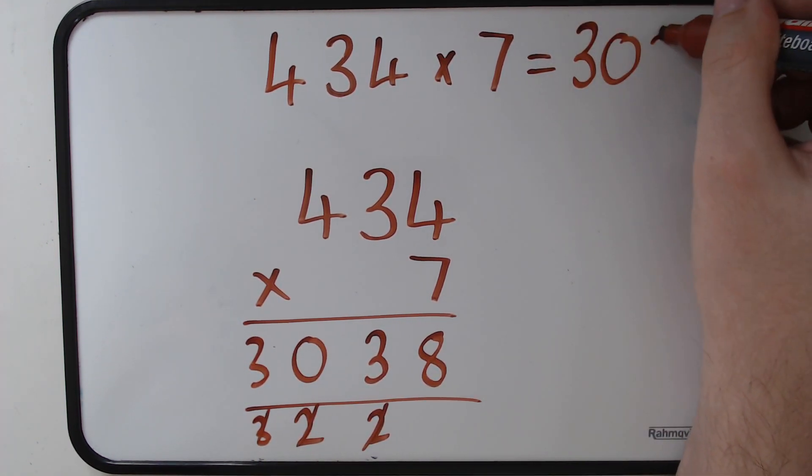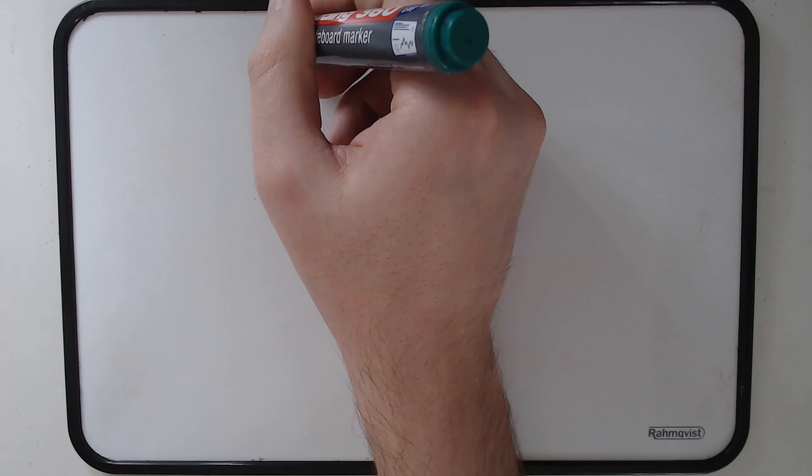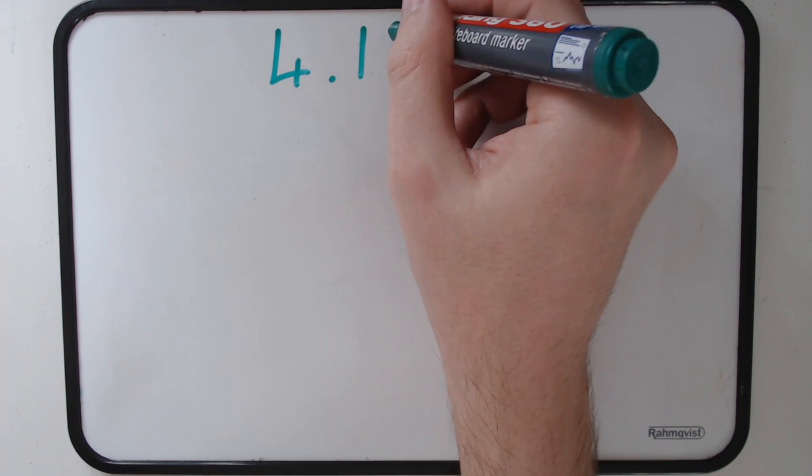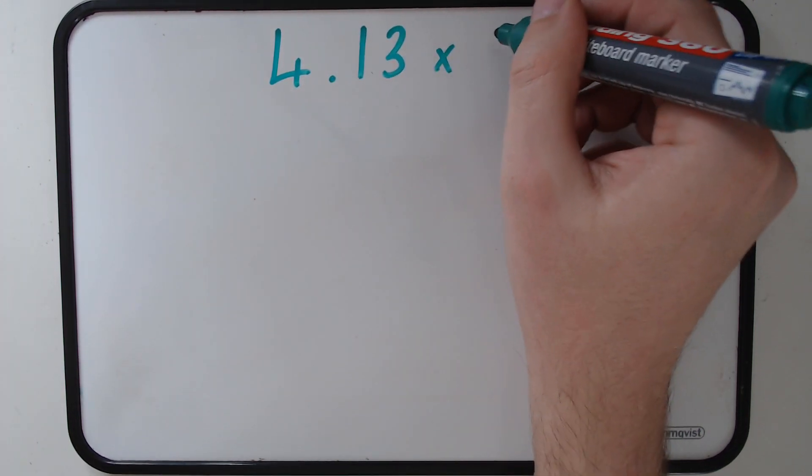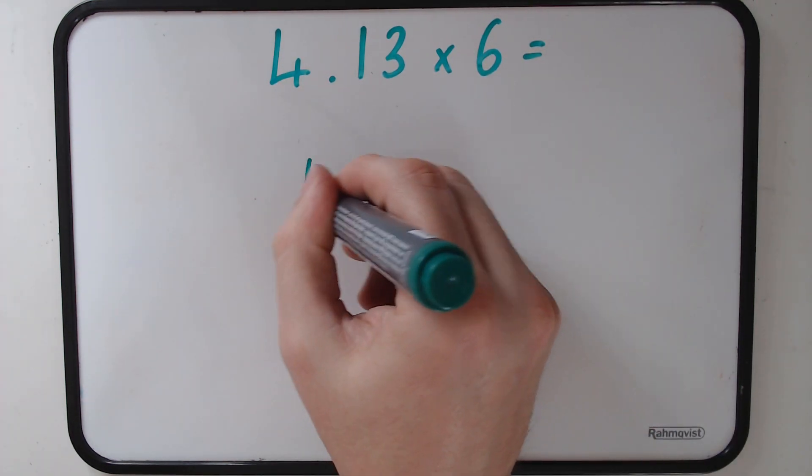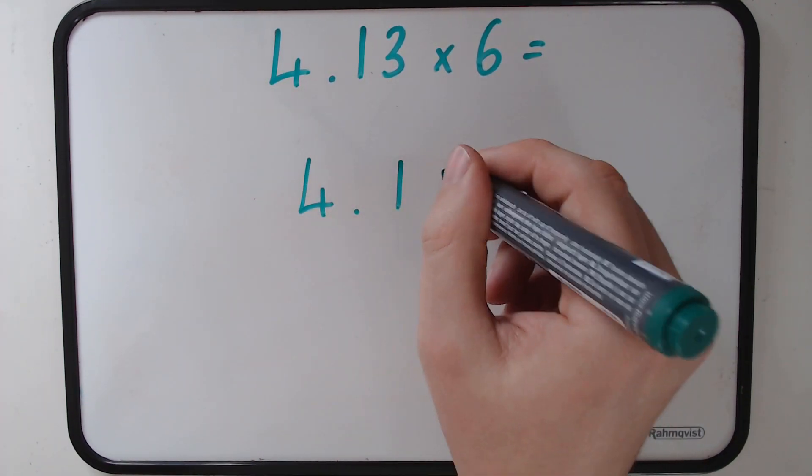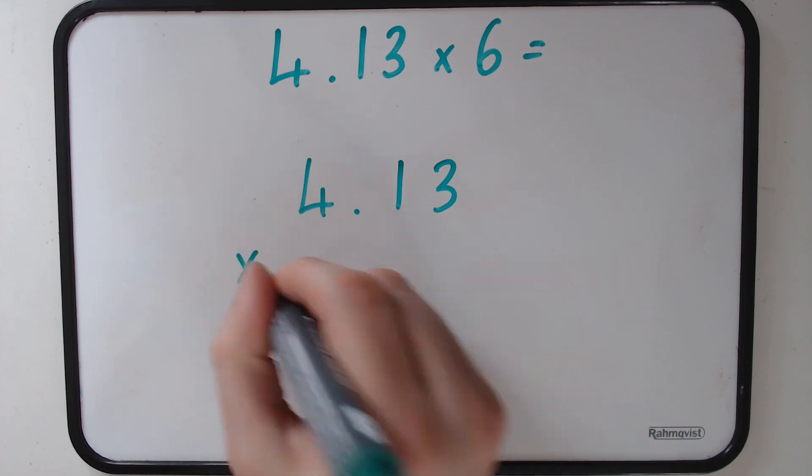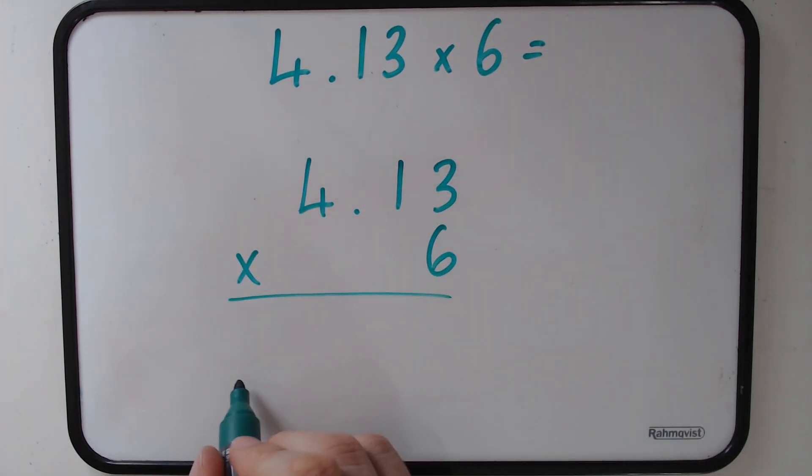For the last example, we're still going to use short multiplication but we're going to use it to times a decimal this time, so 4.13 times by 6. We lay this one out in the same way: 4.13 times by 6. And then we go through and do exactly the same thing, so 6 times the 3, although it's in the hundredth column, and then 6 times the 1 in the tenths column.